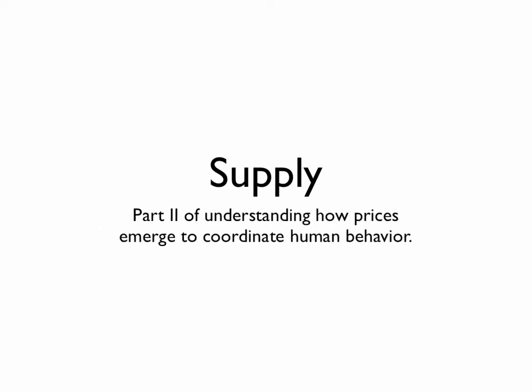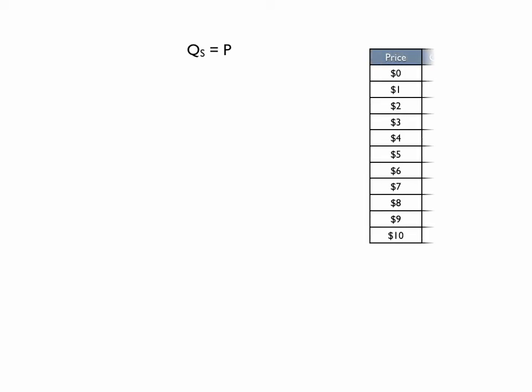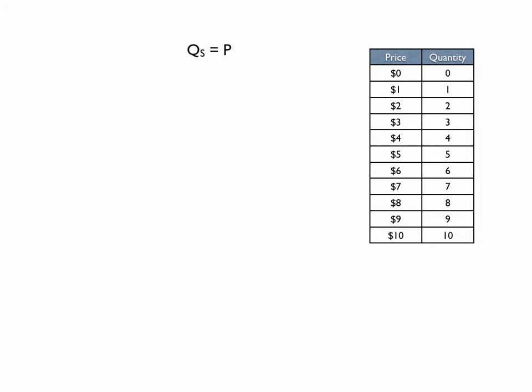This is part two of the three parts of understanding how prices emerge to coordinate human behavior. In this video, we're going to learn about supply. Just as in demand, we can use math to explain the supply of some good or service. We can say the quantity supplied of some good is equal to some function of the price of that good. My specific example here: quantity supplied is equal to the price of whatever good we're talking about. We can map out the different price-quantity combinations that result from this equation.